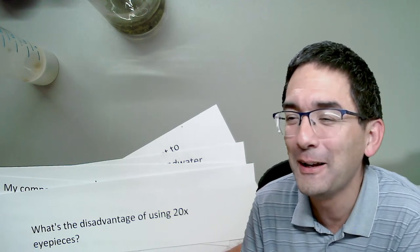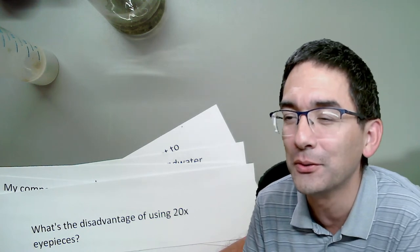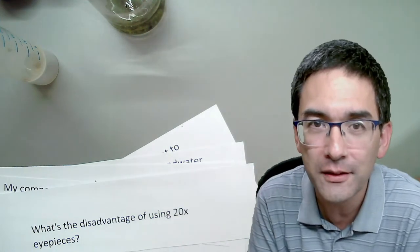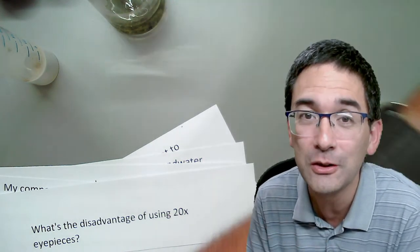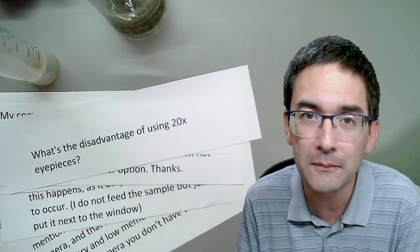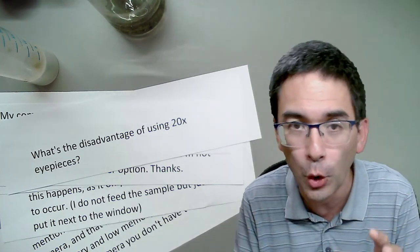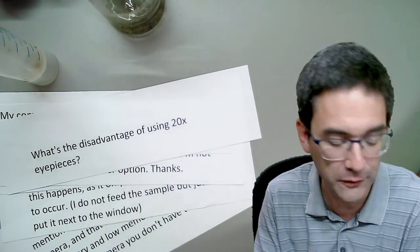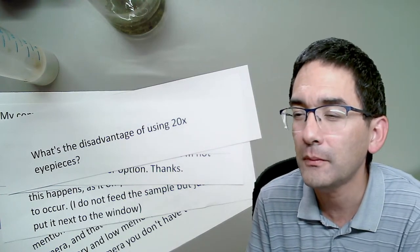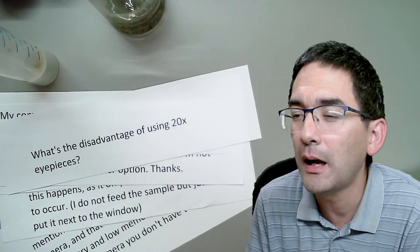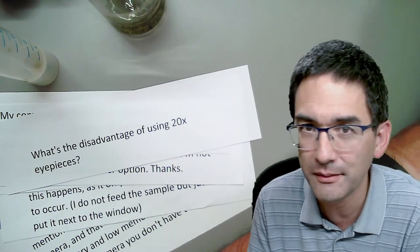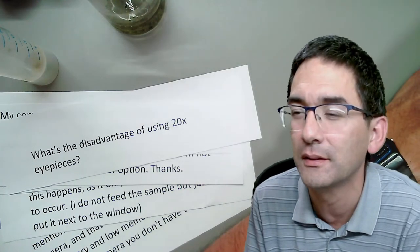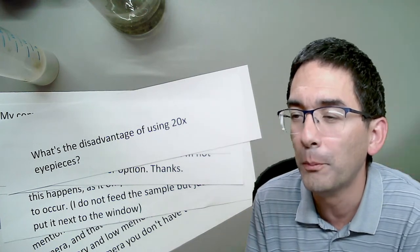The question 'does nature have a color?' is a philosophical one - similar to the tree falling in the forest. Nature emits different wavelengths of light, and our brain interprets the colors. Regarding the Leitz Orthoplan microscope: yes, Leitz was bought by Leica many years ago - same high-quality brand. All those companies are very good.